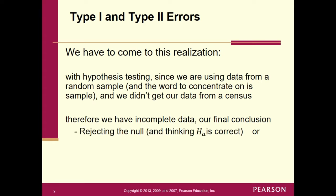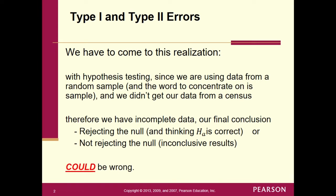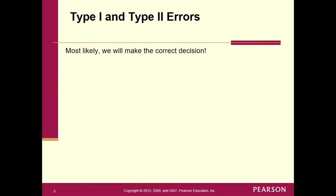So what are the different decisions we could make? We could reject the null and think the alternative is correct, or not reject the null and get inconclusive results. We can simply be wrong in either one of these — because we are only working with a sample and not the entire population.